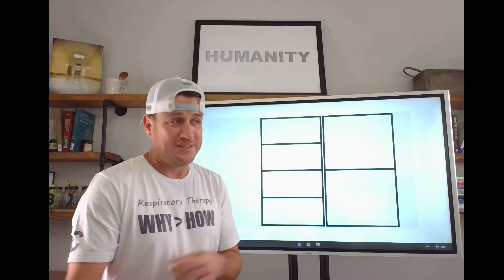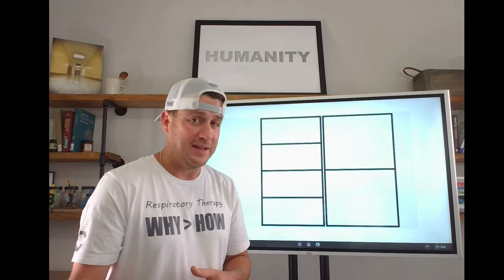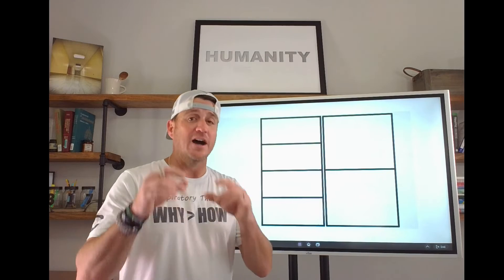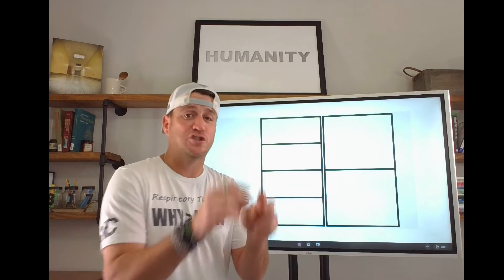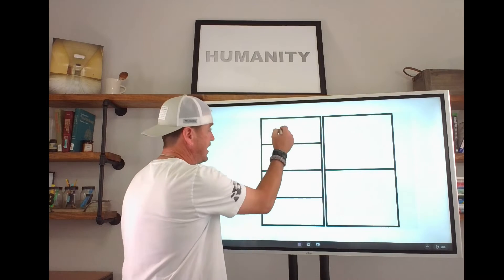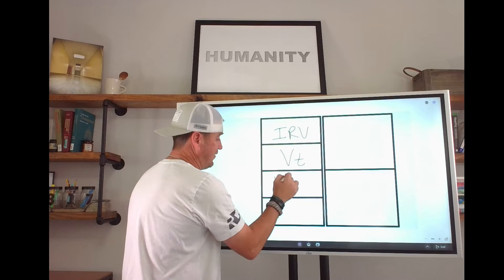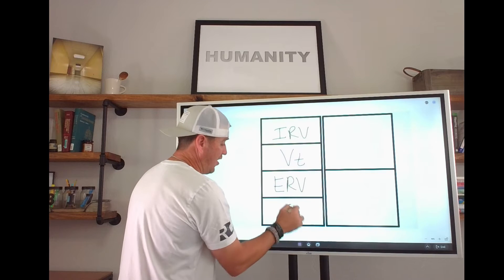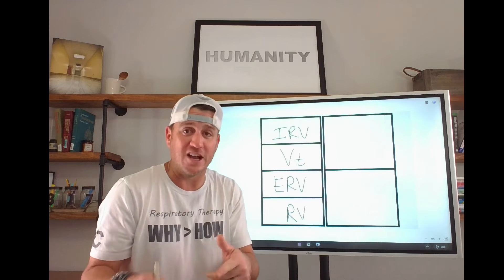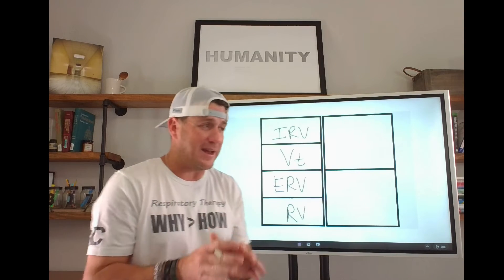Now what we need to understand is that when we start talking about capacities, it gets a little trickier. A capacity is two or more volumes — I'll say that again: a capacity is comprised of two or more volumes. So if we go back and label our volumes, there are four: IRV, VT, ERV, and RV. Those four volumes are going to make up four different capacities.